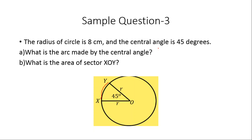Since the radius is 8 centimeters, the circumference is 2πr = 16π. Next, the area is πr², so the area is 64π. Whenever we get questions like this, we first calculate the circumference and area so that our job is easy.